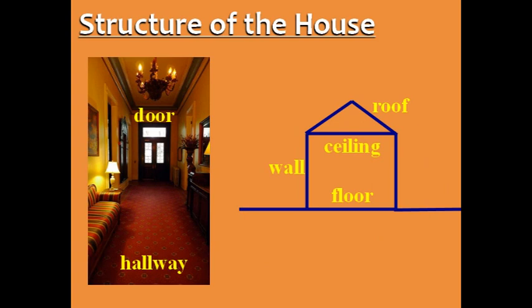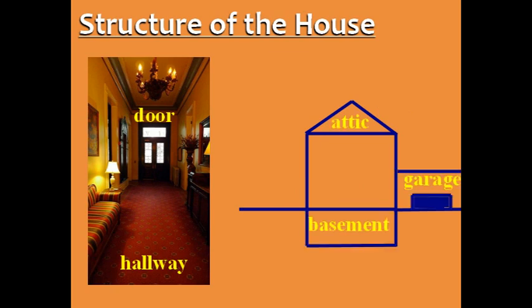Finally, let's go through the hallway and out the door so we can see the outside of the house. The vertical part is called a wall. The bottom is the floor and the top is the ceiling. The word ceiling refers to the interior part, and the word roof refers to the exterior part. Some houses have a basement that is underground and an attic to store things, and you can park your car in the garage.